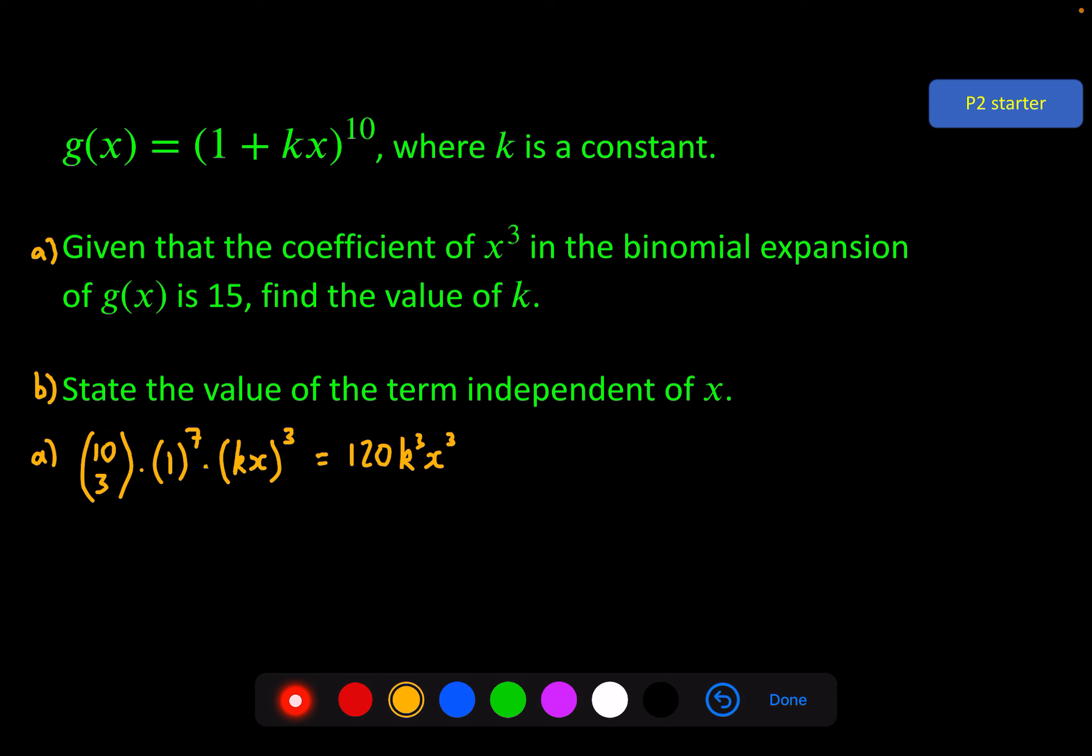And the question is telling us that this coefficient 120k^3 must equal 15. So I can say 120k^3 equals 15 and then I just solve this. Divide through by 120 we get 1/8, which is a nice fraction to be cube rooting. That gives us 1/2. So the answer to part a, the value of k is 1/2.